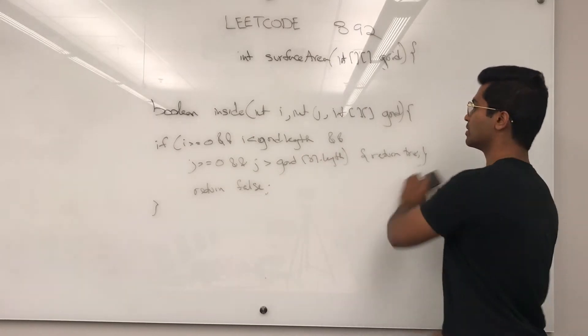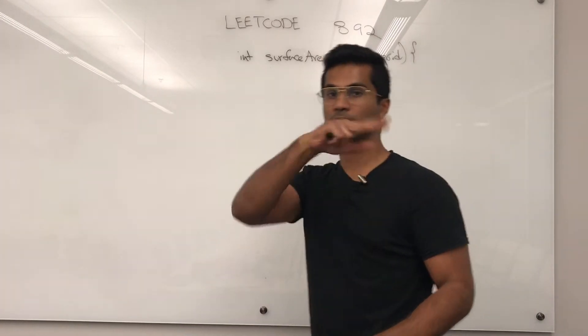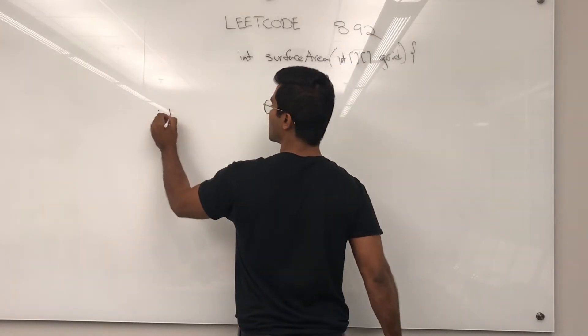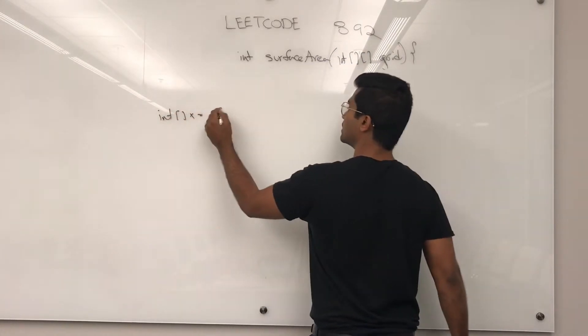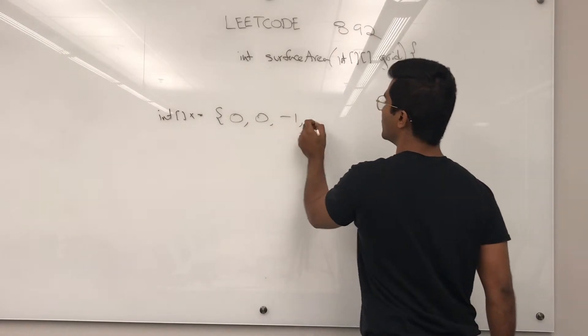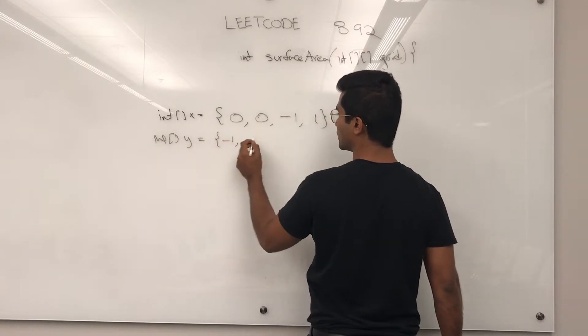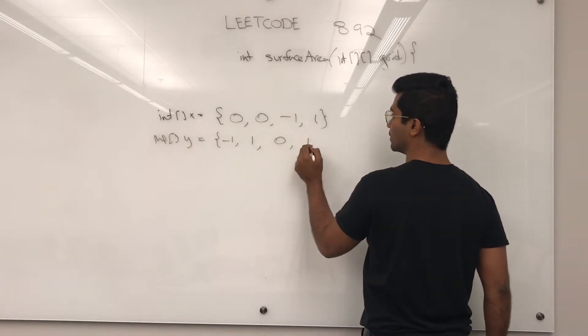Now we're going to make use of this one and another helper array to calculate our up, down, left, and right. So int x is going to be, if we stay on the same level, if we go up, if we go down, and int y is going to be, if we go to the left, if we go to the right, if we go up, if we go down.